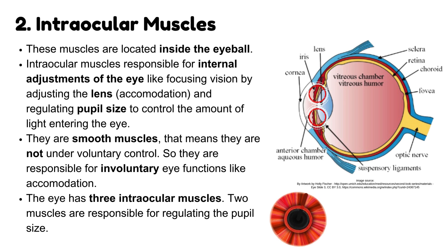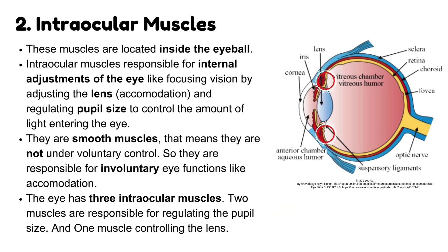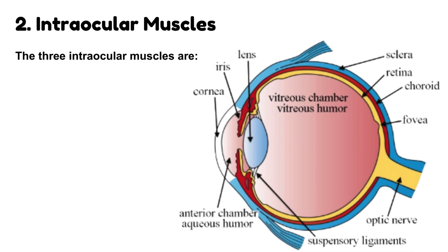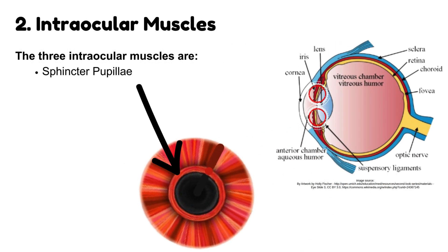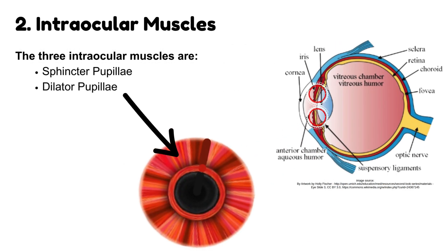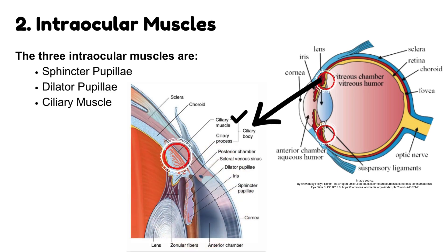The eye has three intraocular muscles. Two muscles are responsible for regulating the pupil size, and one muscle controls the lens. The three intraocular muscles are: Sphincter pupillae, Dilator pupillae, and Ciliary muscle.